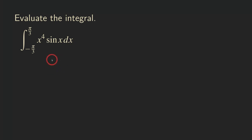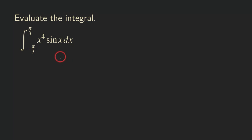But here, if you look at this function right here, we need to use integration by parts to integrate this function. It's because it's a product of x to the fourth times sine of x. So if we are to do integration by parts, either we use the tabular method or we are going to have to use the traditional method four times to find the antiderivative for this function.